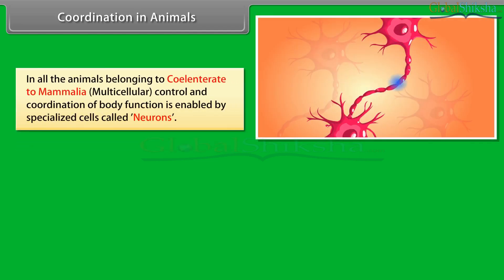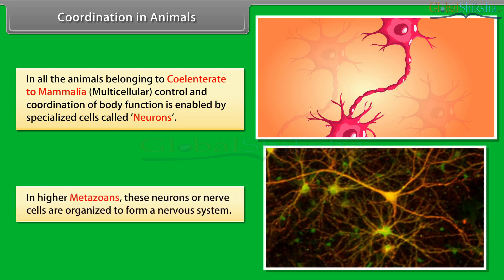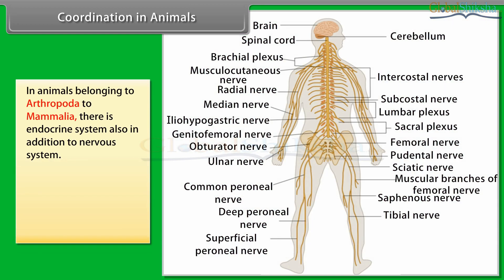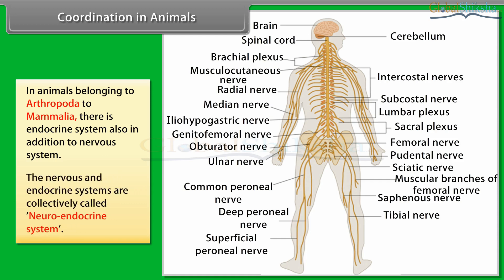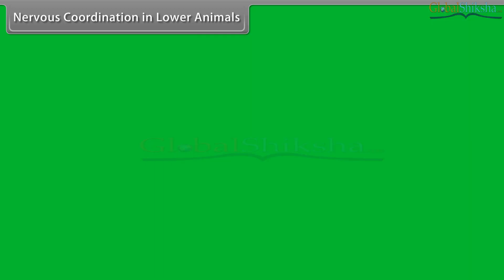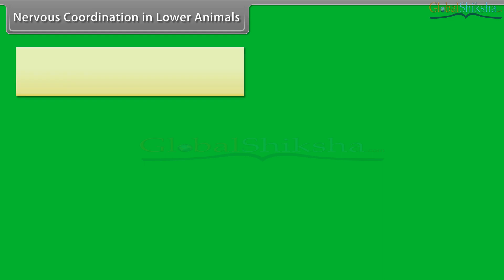In all animals from coelenterates to mammalia, multicellular control and coordination of body functions is enabled by specialised cells called neurons. In higher metazoans, these neurons are organised to form a nervous system. In animals belonging to arthropoda to mammalia, there is also an endocrine system in addition to the nervous system. The nervous and endocrine systems are collectively called the neuroendocrine system.